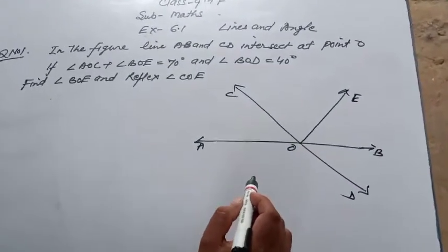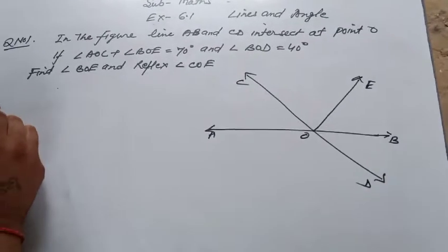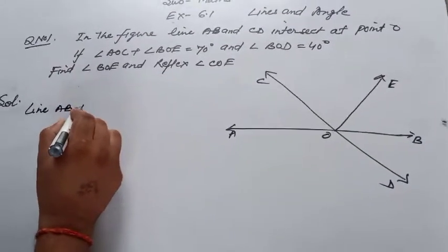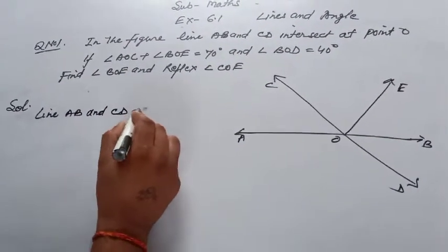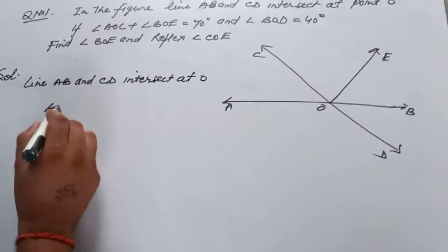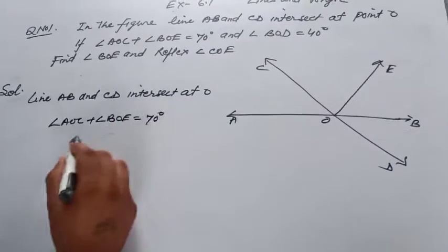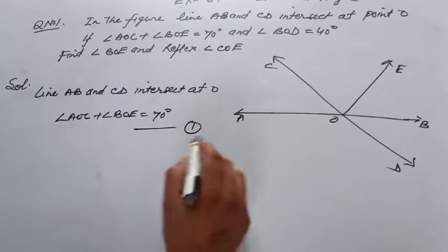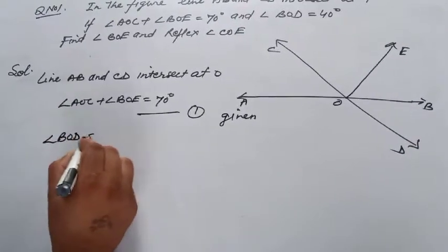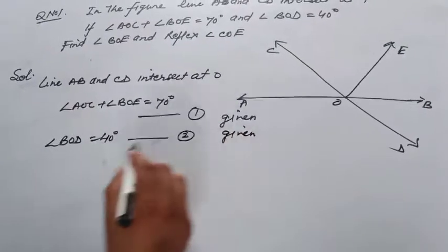Now, this line OE at O. Angle AOC plus angle BOE is equal to 70 degrees, equation first. Angle BOD is equal to 40 degrees, equation 2, this is also given.